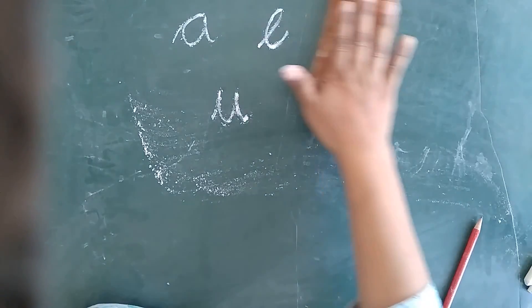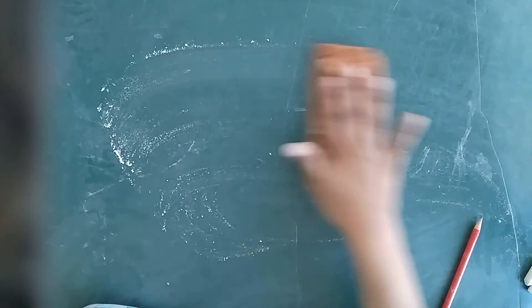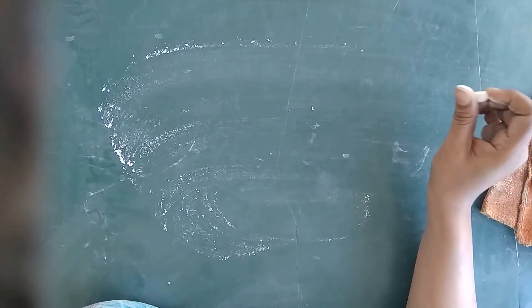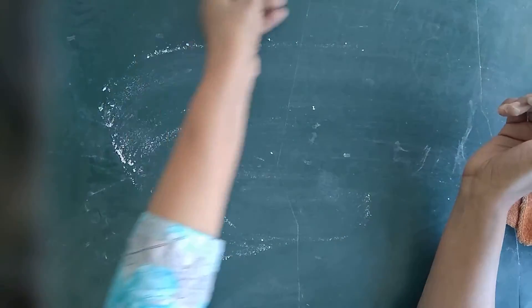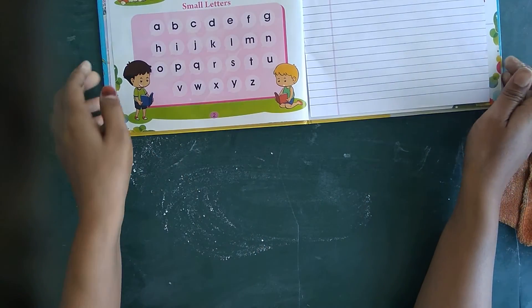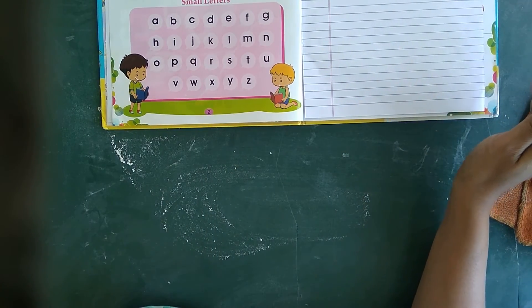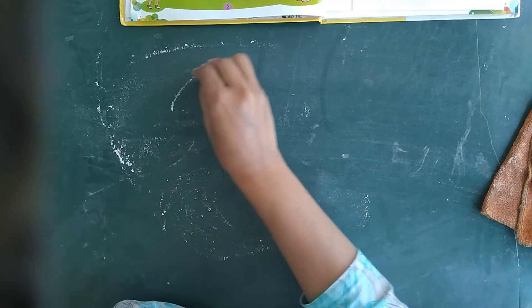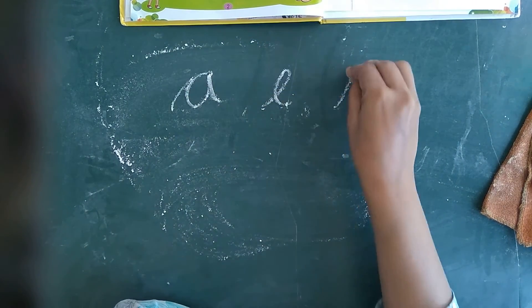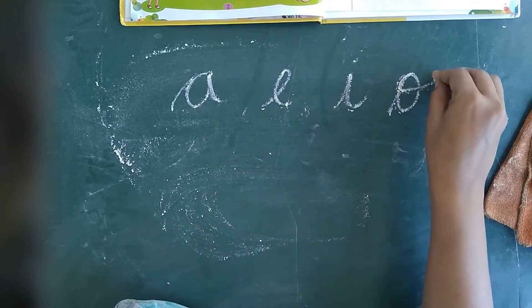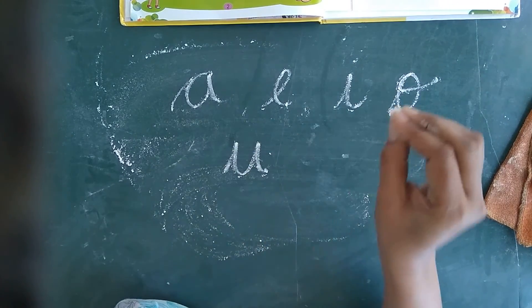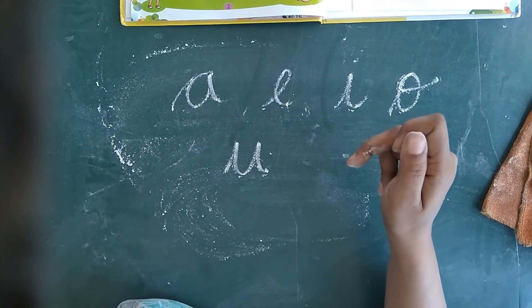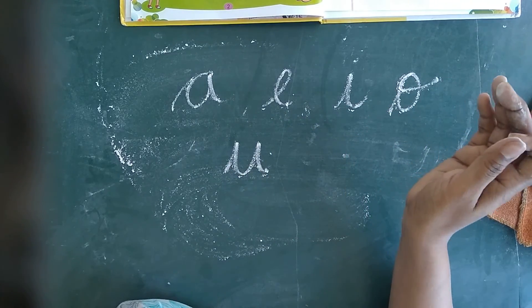Now consonants. How many consonants in alphabet? What is consonant? Consonant kya hai? All letters except A, E, I, O, U are called consonants.